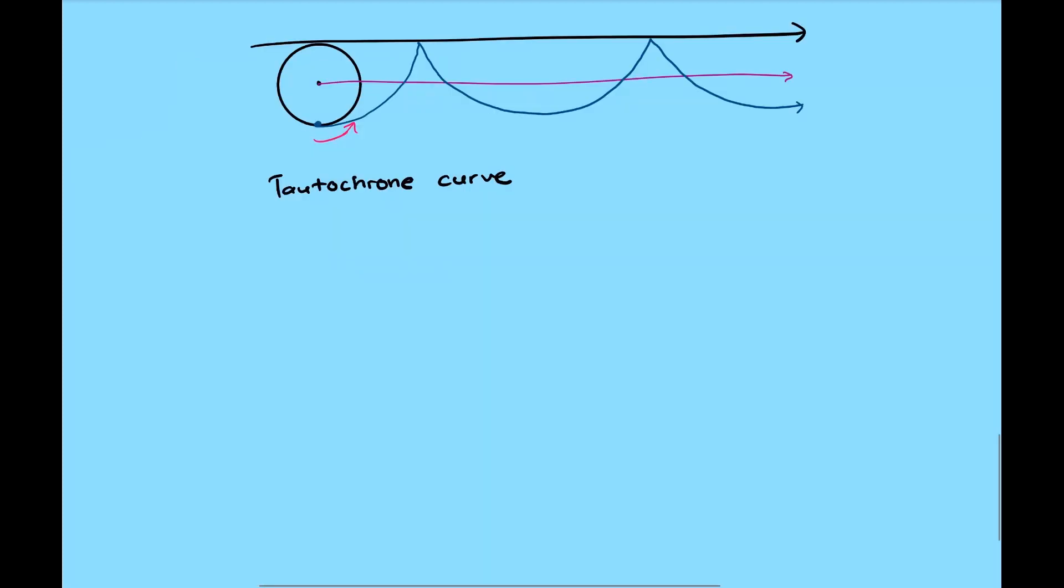A bit of extra information, the cycloid is also referred to as tautochrone curve, which referred to as parts of the same time. So if we build a ramp in the form of cycloid, and if we put several particles on this ramp at different position, and then release them at the same time, they will reach the bottom exactly at the same time, independent of their initial positions. And this time is given by t is equal to pi times square root of r over g, where r is the radius of the disc that form the cycloid, and g is the gravity acceleration.